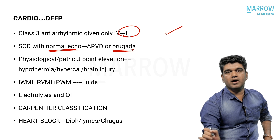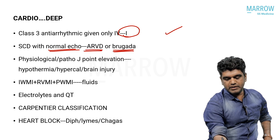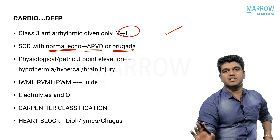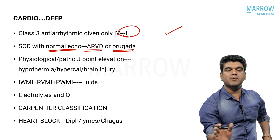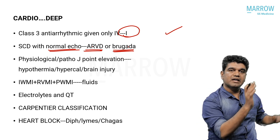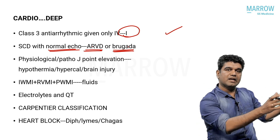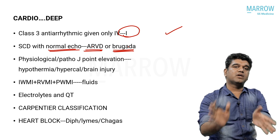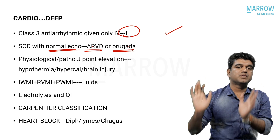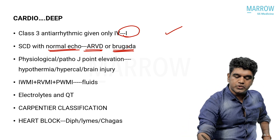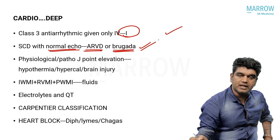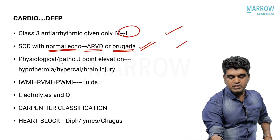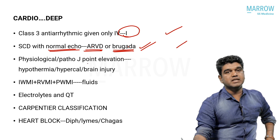Sudden cardiac death with normal echo — most people know Brugada. The confusion is whether it is ARVC or Brugada. If you watch Nishan's videos, he keeps mentioning that the right side of the heart can be neglected and missed, but ARVC is picked up on an echo. So Brugada is the answer. Again, it is an SS-level question requiring specialist understanding.